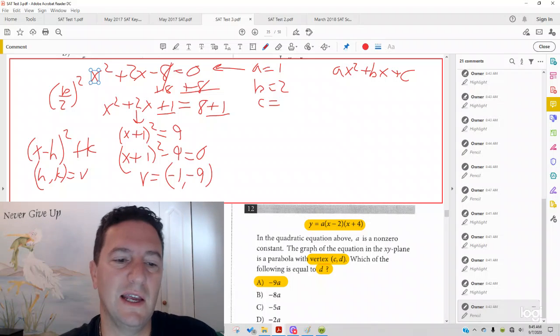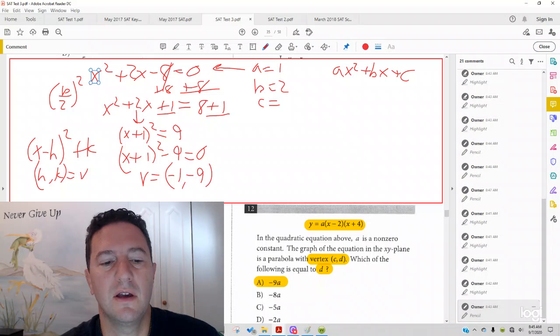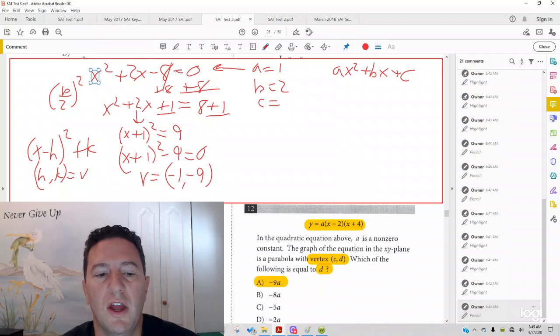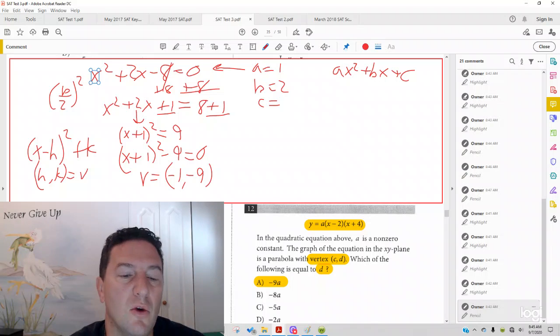And notice, since it's minus h in the parentheses, the x part of the vertex is always opposite what you see in the parentheses. So we see a positive 1 in that parentheses. So the x part of the vertex is negative 1, y part of the vertex is outside the parentheses, negative 9.